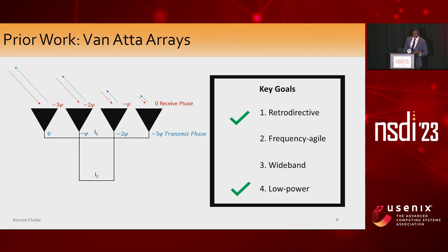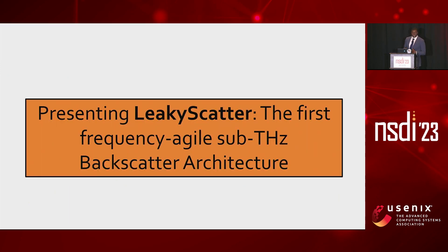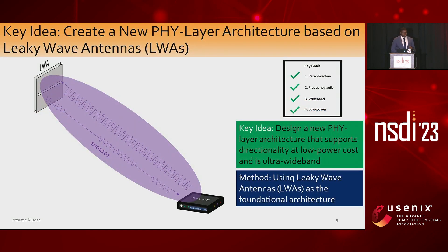Other prior works have proposed using Van Atta arrays, which can provide retroactive links at zero power cost and have been demonstrated up to 28 GHz. But the problem with this design is that these are inherently narrowband because the antenna size and transmission line that enable this are designed for a specific wavelength, forfeiting two key conditions of frequency agileness and wideband operation. As such, to solve these issues and achieve all key goals, we developed a new architecture — Leaky Scatter — the first frequency agile sub-terahertz backscatter architecture. We create a new physical layer architecture based on Leaky Wave antennas to enable the achievement of these key goals.